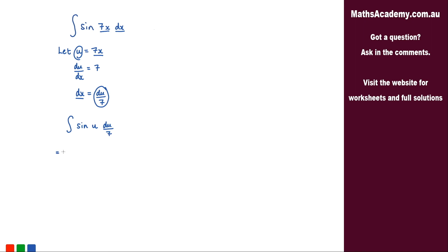Now let's take that 1 over 7 outside the integral. 1 over 7, we've got the integral of sine u with respect to u, and that's a very simple integral. The integral of sine is negative cosine.